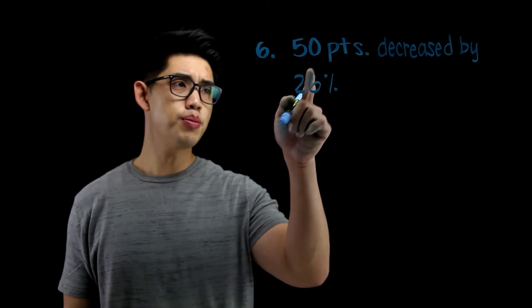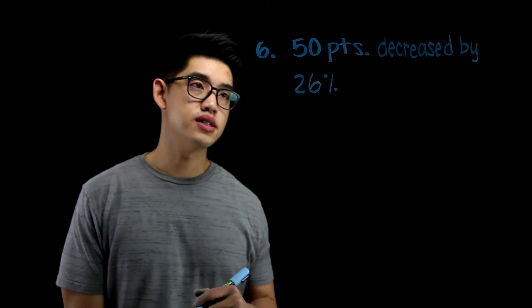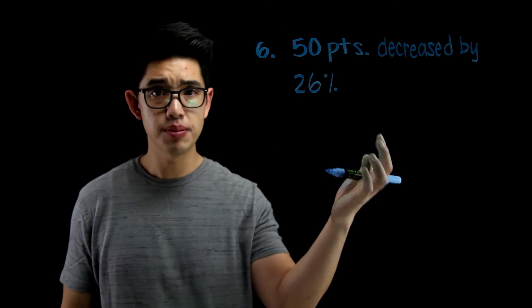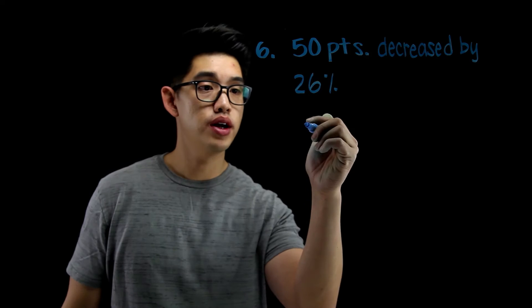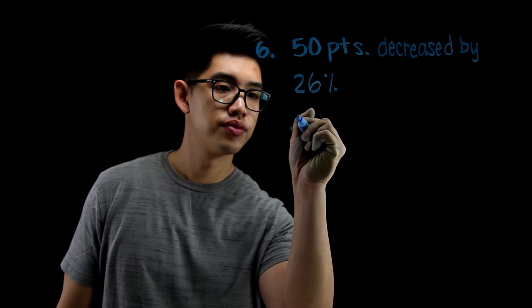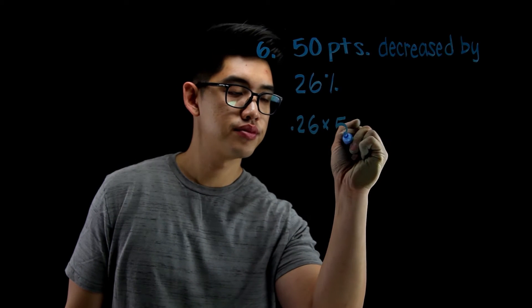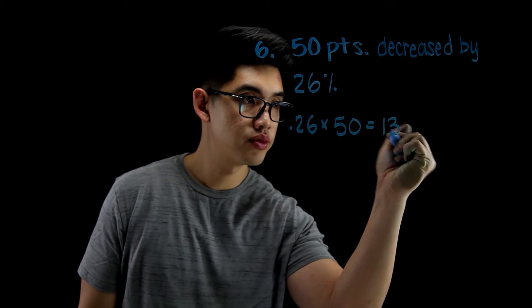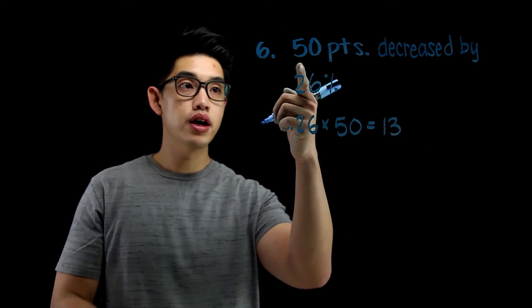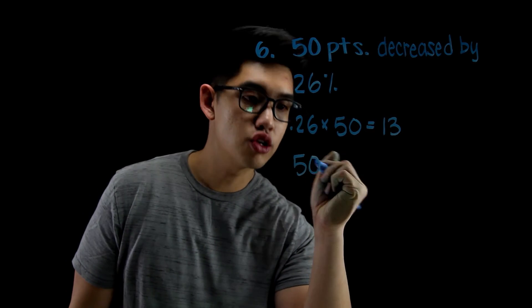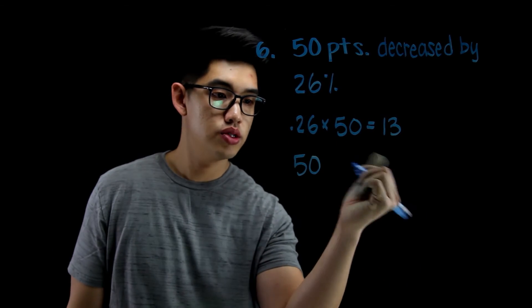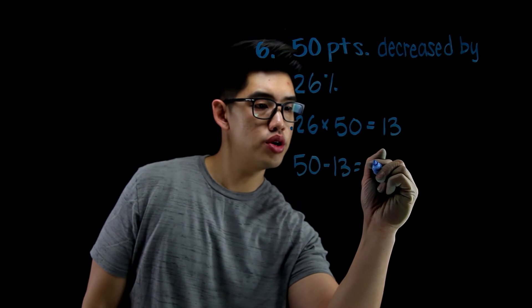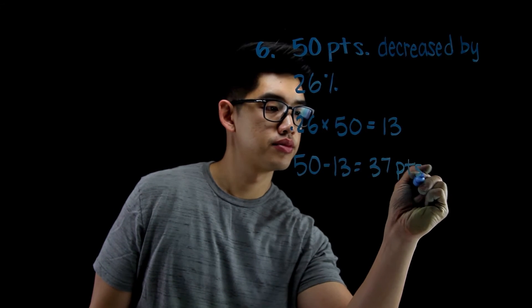For number 6, it says 50 points decreased by 26%. How many points is that? So I could just find 26% of 50 points. I could multiply them, right? I could say 0.26 times 50. And to find out what 26% of 50 is, that's going to be 13 points. So I want to get my original 50 points. And since it was decreased by that 26%, which is 13 points, I'm going to do 50 minus 13. And that's going to give you 37 points.